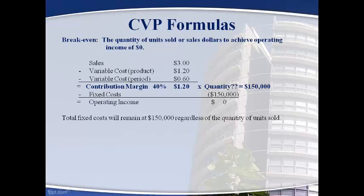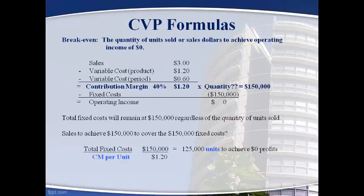Let's continue our example with calculators and determine sales in units and dollars to breakeven. The contribution margin per unit and the contribution margin ratio will not change when sales change, and total fixed cost will also remain the same. So the question is: how many units sold will give the $150,000 in contribution margin necessary to cover the fixed cost and breakeven? Dividing the fixed cost by the contribution margin per unit gives the units required to breakeven; dividing by the contribution margin ratio gives the total sales dollars to breakeven.